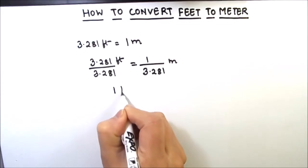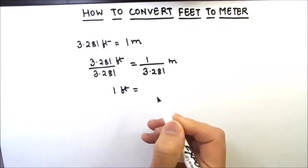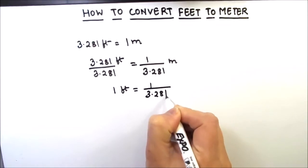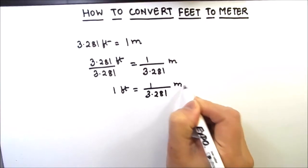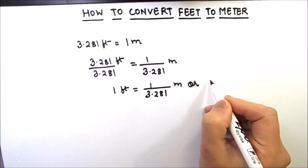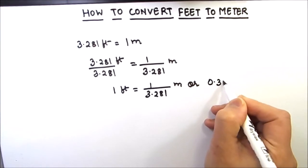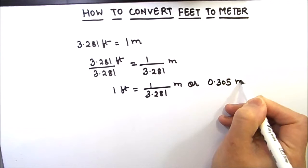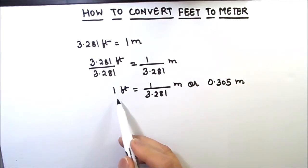On the left hand side we will get 1 foot, which is equal to 1 divided by 3.281 meters, or if we want to write it in decimals, that is 0.305 meters.